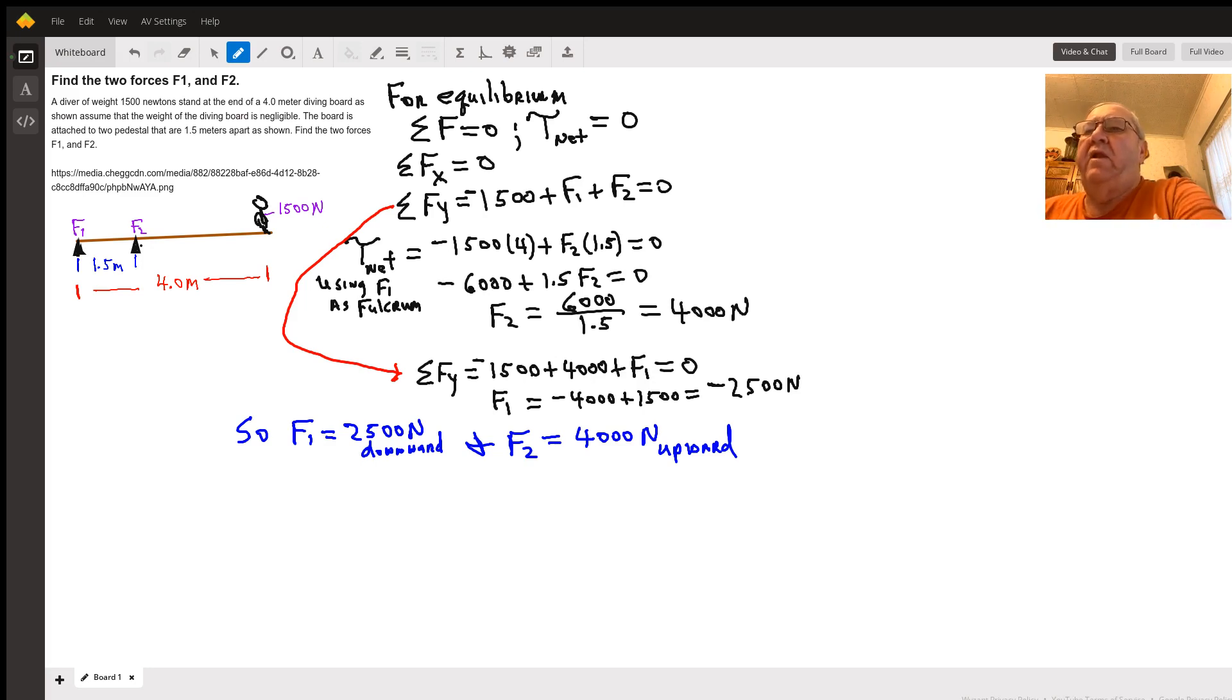That would be my diver, which would be a clockwise torque, and clockwise torques are considered to be negative. So that would be minus 1,500 times its distance, 4 meters from the fulcrum, plus F2 times its distance from the fulcrum, 1.5. That has to be equal to zero.